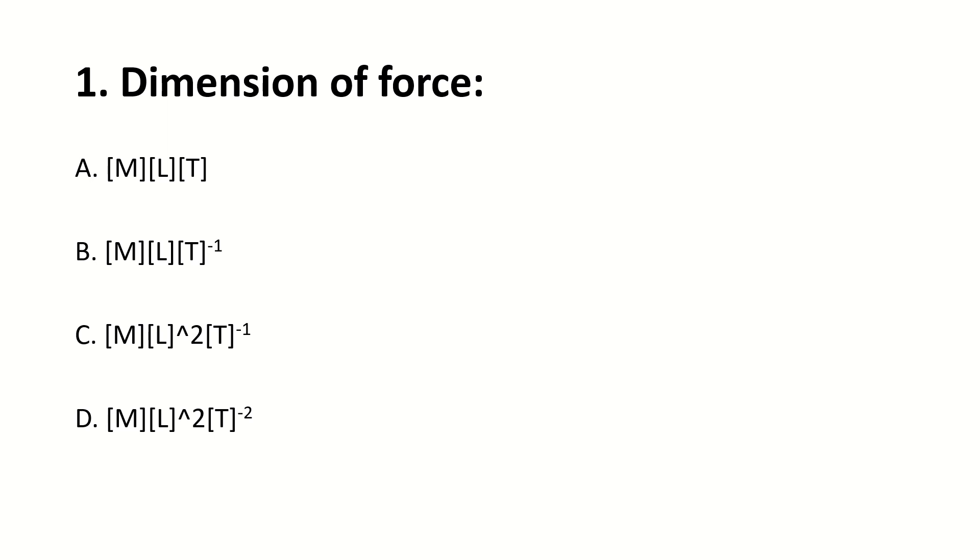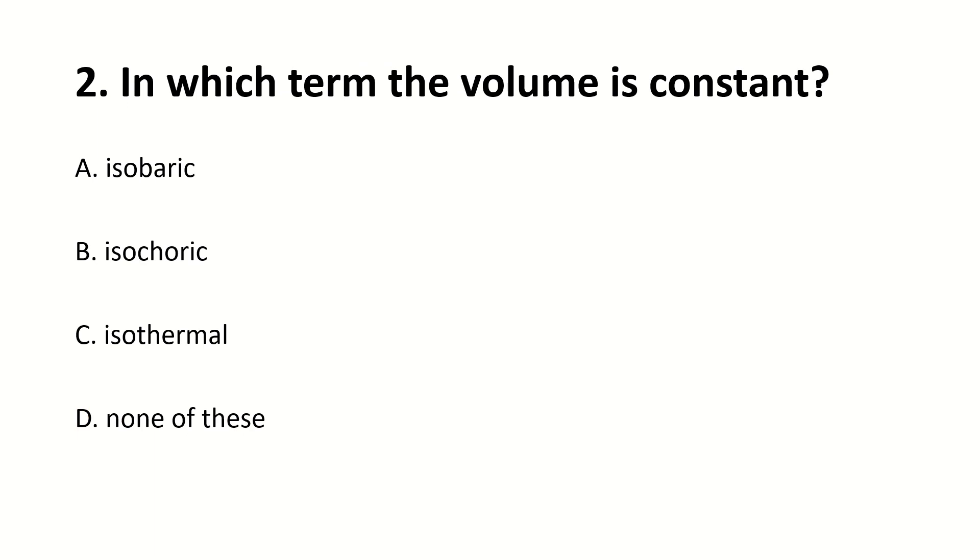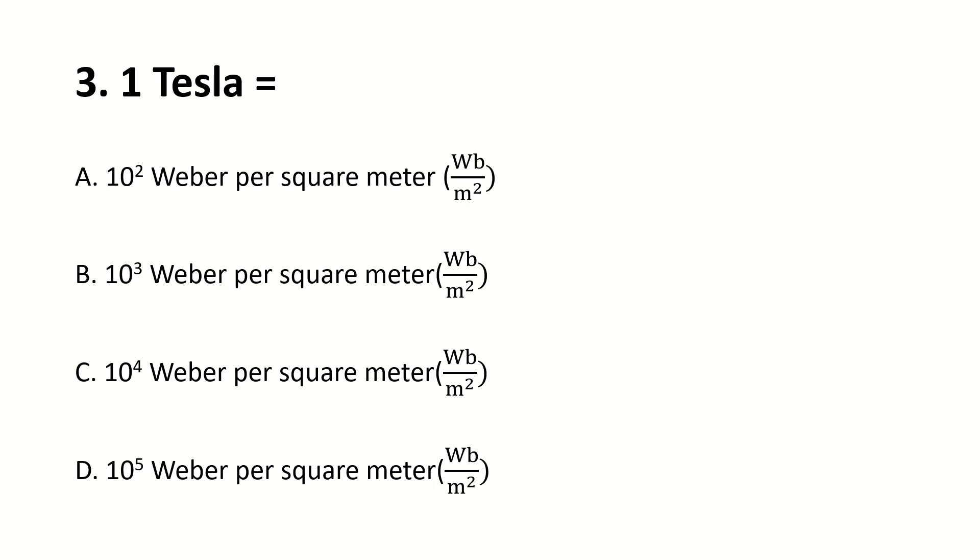Dimension of force is. The right answer is D: M L T power minus 2. In which term the volume is constant? Right answer is C: Isothermal. 1 tesla is equal to. Right answer is C: 10 power 4 weber per square meter or Wb upon m square.